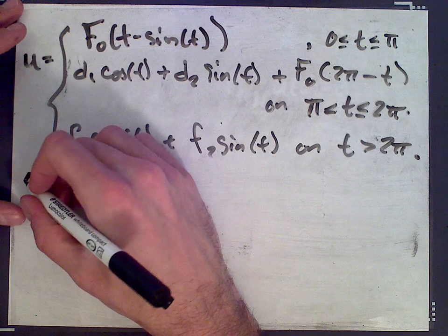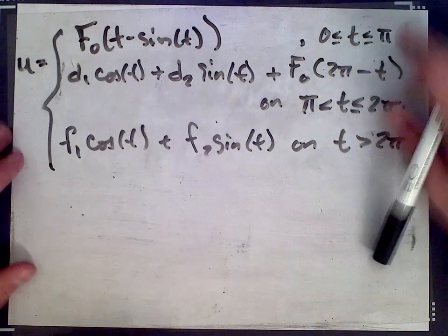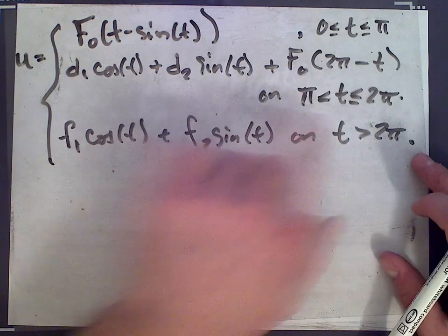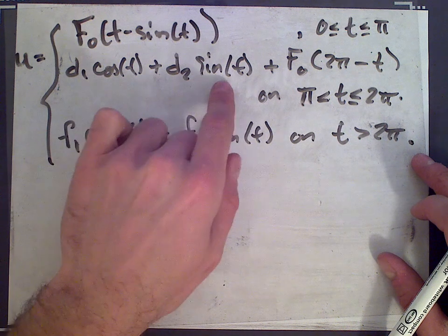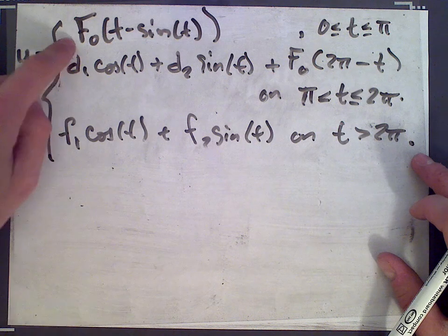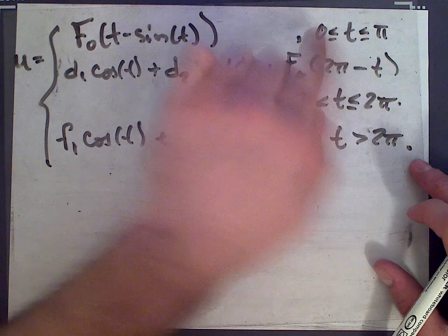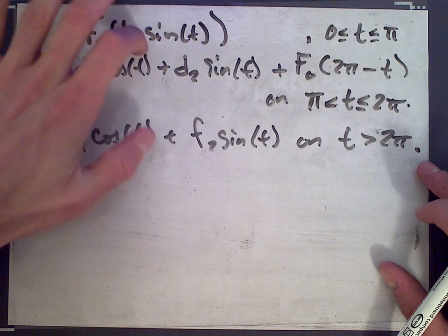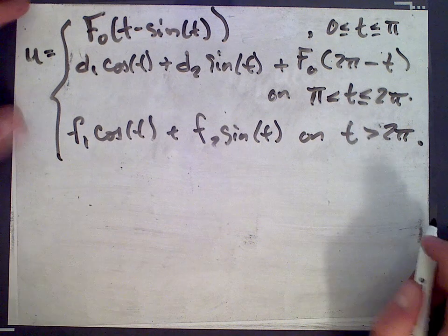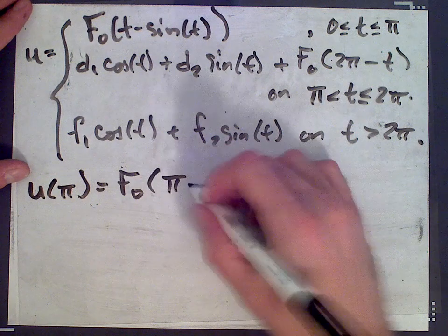So let me just... I'll just say this instead of write it. But I'm going to plug π into u with this definition here, and that value should match when π gets plugged in to this definition here. So t is defined as being π when using this definition, but if we take the limit as t goes to π here, we want that value to be the same as this function evaluated, this definition evaluated at π.